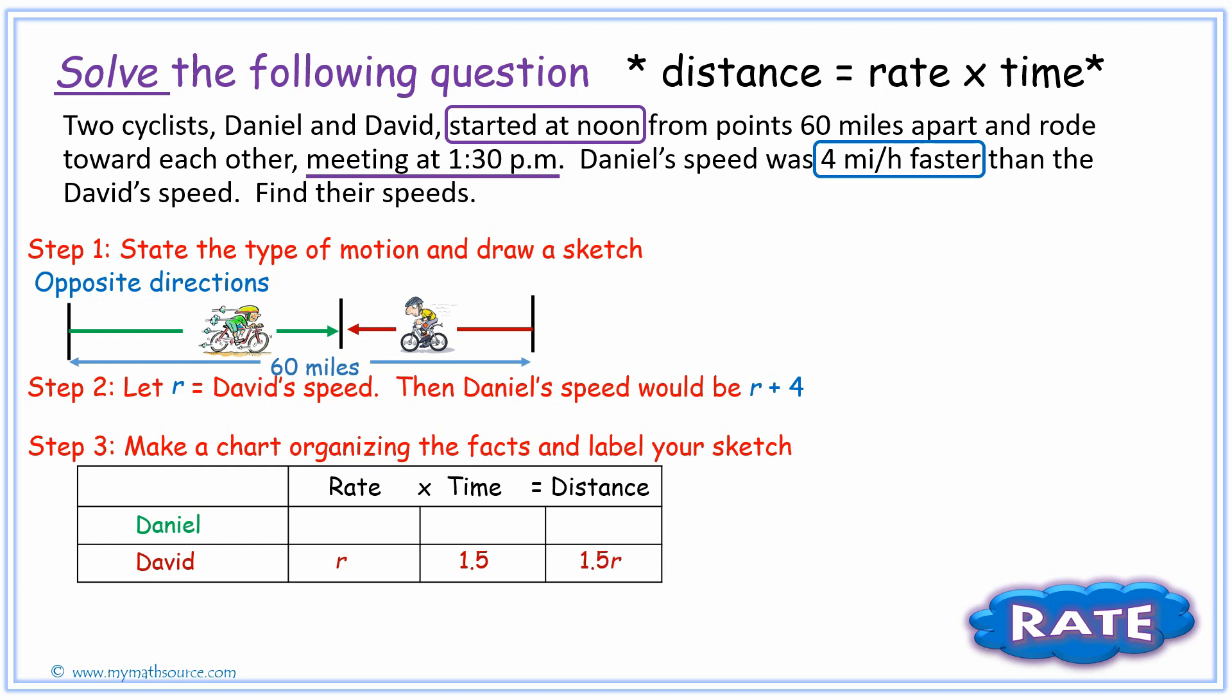That helps us to easily find our distance to simply be 1.5 times r. Now we can look at Daniel. Remember, Daniel's going to be r plus 4 because he's four miles per hour faster than what David is actually traveling. In terms of our time, it's the same amount of time. So our distance for Daniel that he traveled will be 1.5 times the quantity r plus 4.